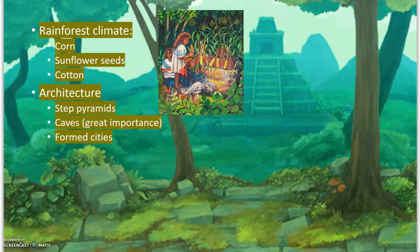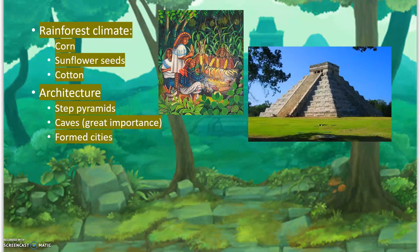They had many different pyramids for their architecture, like you can see in the background or this image, which are still existing today. They obviously made them very strong because they've lasted for thousands of years. They also had caves which were of great importance to their culture, and these pyramids and caves formed cities.